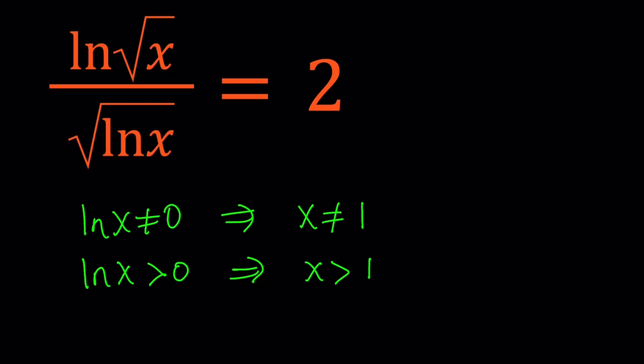So that gives us ln square root of x equals 2 times square root of ln x. I could write the x inside the parentheses, but it's usually understood. ln x means ln of x when x is inside the parentheses.